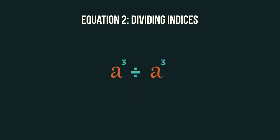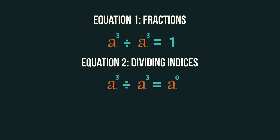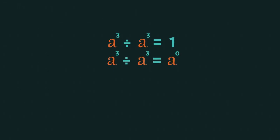And then using our indices knowledge when we divide we subtract the powers. So three minus three is zero. And that's our second equation. We've done the same calculation in two different ways. Therefore the two answers must equal one another. So combining these two things, anything to the power of zero equals one.